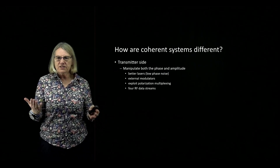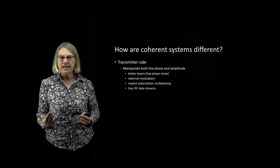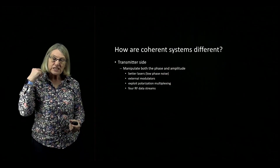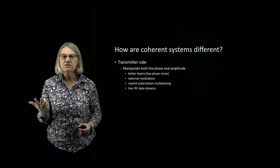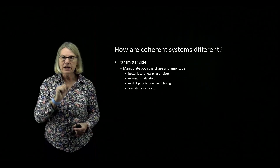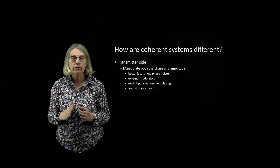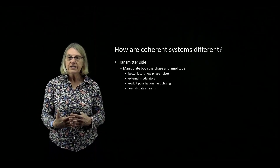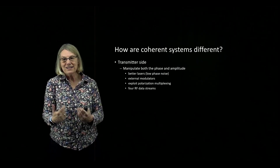Let's start with coherent systems on the transmitter side. The big difference with coherent detection is that I'm going to manipulate both the phase and the amplitude. Because of this strategic decision, there are implications on the equipment needed. First, I'm going to need better quality lasers — specifically regarding the phase noise, the laser line width. I'll require lower line width, lower noise lasers in order to exploit phase modulation. If I'm putting information on the phase, I can't have too much noise on the phase.